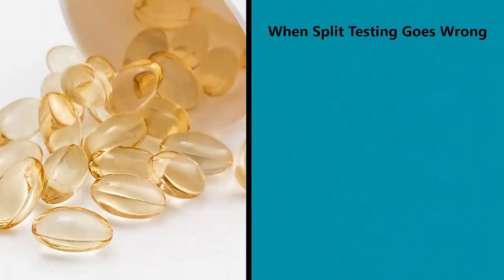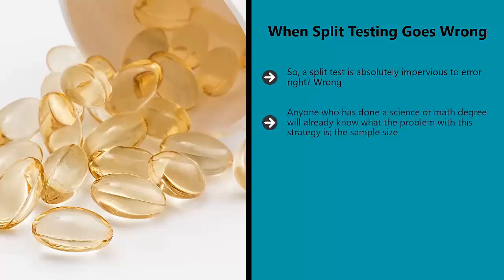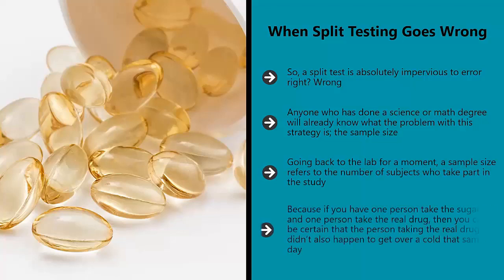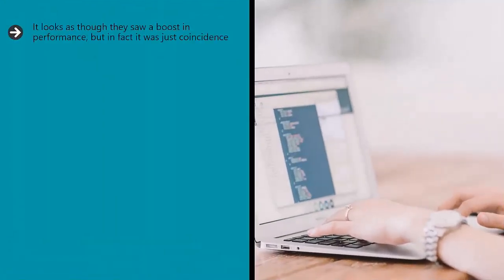When split testing goes wrong. So a split test is absolutely impervious to error, right? Wrong. Anyone who has done a science or math degree will already know what the problem with this strategy is: the sample size. A sample size refers to the number of subjects who take part in the study. Because if you have one person take the sugar pill and one person take the real drug, then you can't be certain that the person taking the real drug didn't also happen to get over a cold that same day. It looks as though they saw a boost in performance, but in fact it was just coincidence.